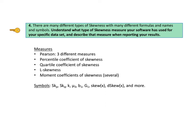Since the formulas for skewness can involve calculations that are cumbersome to do manually, involving summations of differences, for example, software is usually used. The caveat here is KTU number 4. Understand what type of skewness measure your software has used for your specific data set and identify that measure when reporting your results.